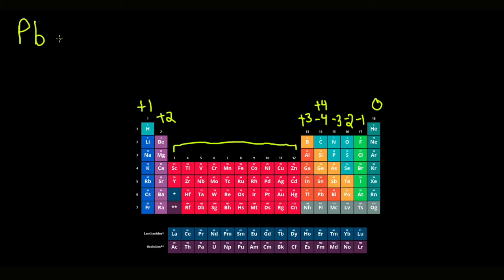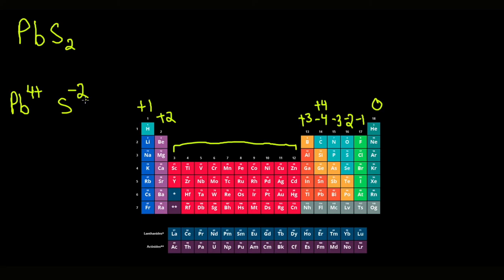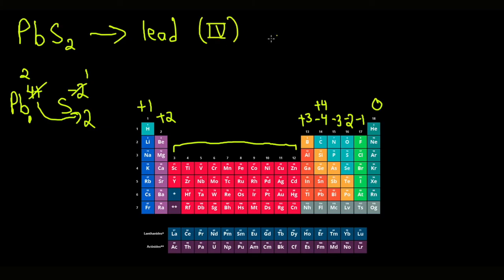Another cancellation example is PbS2. Lead is multivalent — either four plus or two plus — and sulfur is minus two. Since the formula gives us subscripts of one for Pb and two for S, the crisscross backwards tells us lead is four plus, because four and two both divide by two, giving subscripts two and one. So the name is lead(IV) sulfide.